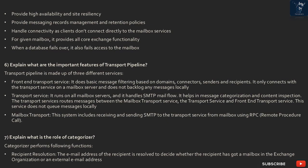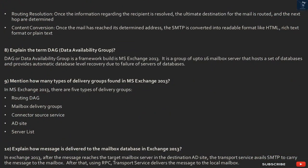Question 7: What is the role of the categorizer? The categorizer performs the following functions. Recipient Resolution: the email address of the recipient is resolved to decide whether the recipient has a mailbox in the Exchange organization or an external email address. Routing Resolution: once the recipient information is resolved, the ultimate destination for the mail is routed and the next hop is determined. Content Conversion: once the mail has reached its determined address, the SMTP is converted into a readable format like HTML, rich text format, or plain text.